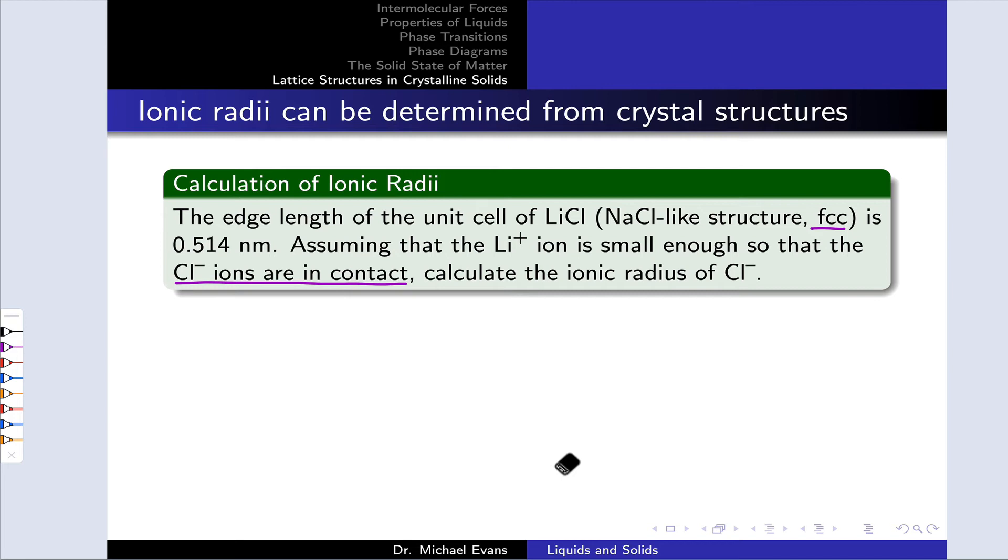Our goal here is to use information about this crystal structure, specifically the edge length of the unit cell of the FCC lattice of the chloride anions, to calculate the ionic radius of Cl-. We haven't been told whether the Li+ ions are occupying tetrahedral or octahedral holes, so we may be scratching our heads a little bit as far as how to proceed.